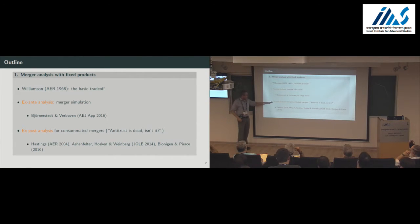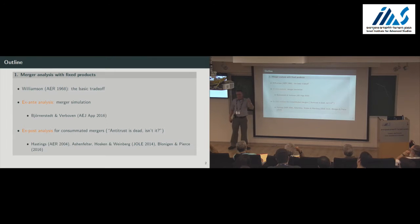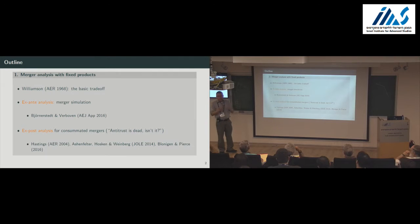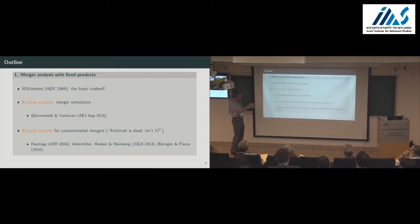Then we'll switch gears quite radically to talk about ex-post analysis for mergers that actually took place — retrospective analysis. Some mergers already happened, and now we want to go back to the data and ask: what happened there? What happened to prices? What happened to welfare? Et cetera. This is really where academic papers get cited a lot in this current debate.